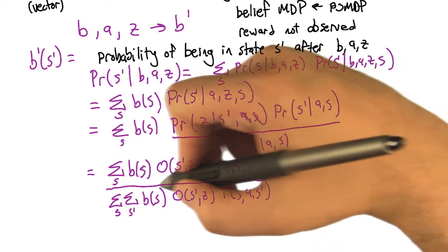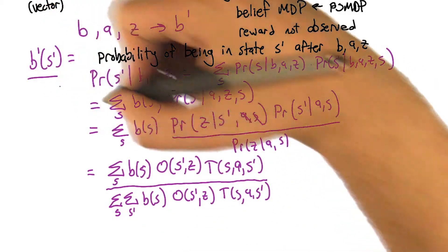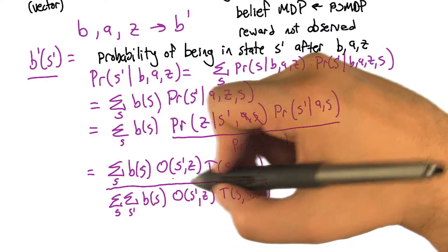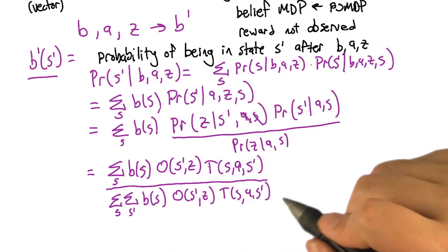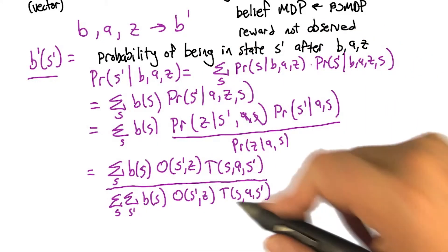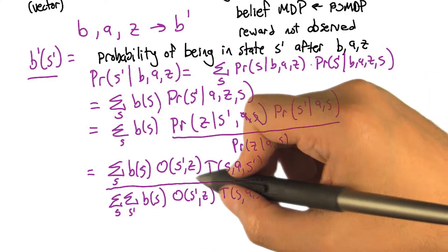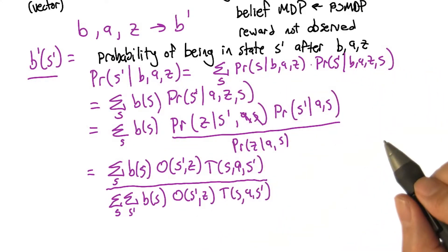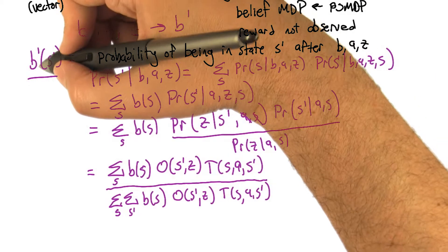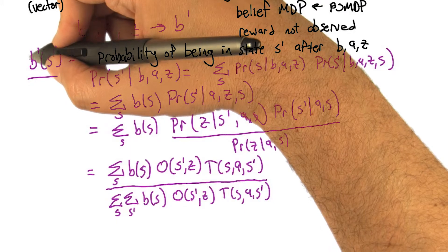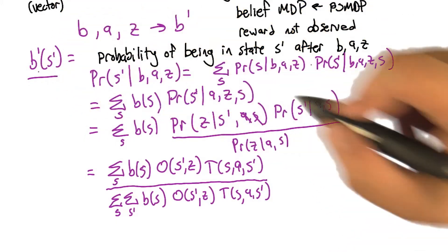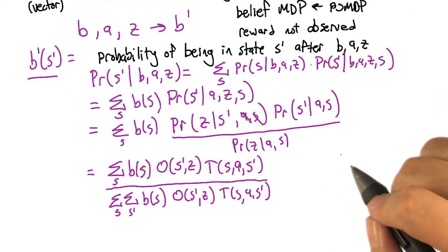My point is that this B prime S prime can be easily calculated from quantities that we have lying around, because we have the model of the POMDP, and we know what the previous belief state is, and we know what action we just took, and what observation we made. And so all this can be updated. And so we can keep track of this notion of where we are, this belief state notion of the belief MDP. I like it. Cool.